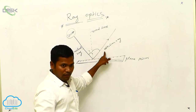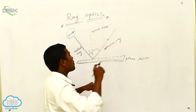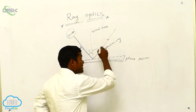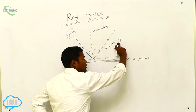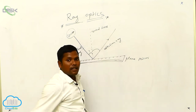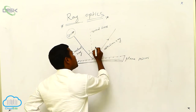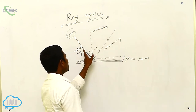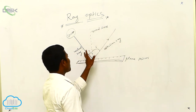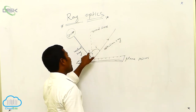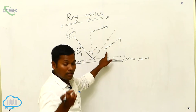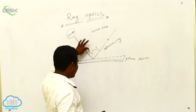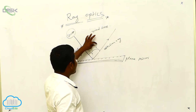We are calling this angle and denoting it as small r. We use small r because the word 'reflection' starts with r. So this line and this line make an angle i, and this line and this line make an angle r. This is i and this is r.